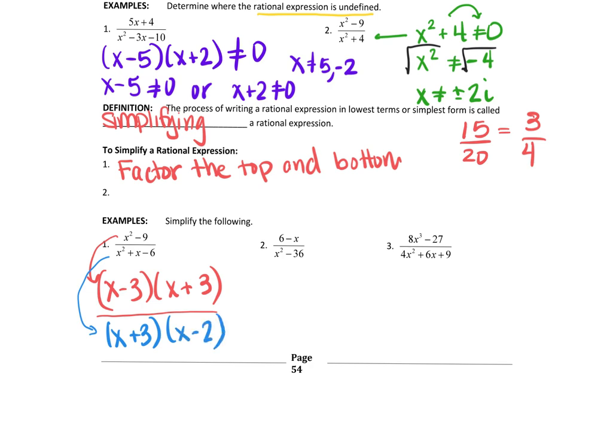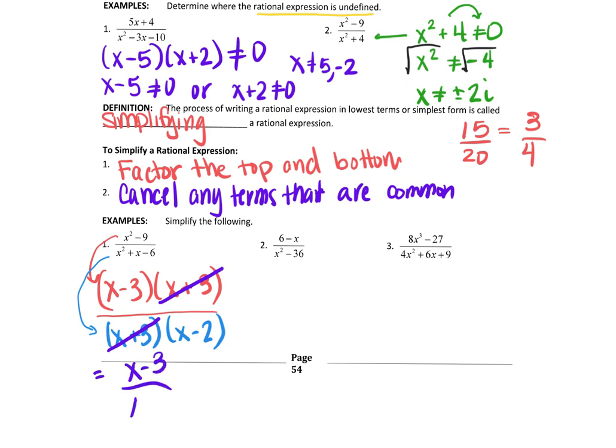So once you factor, the next thing is you're going to try to, or you're going to cancel any terms that are common to both the denominator and the numerator. So in this particular case, notice that you have an x plus 3 and an x plus 3 common to both. So in simplest terms, the solution, the answer here is x minus 3 over x minus 2.